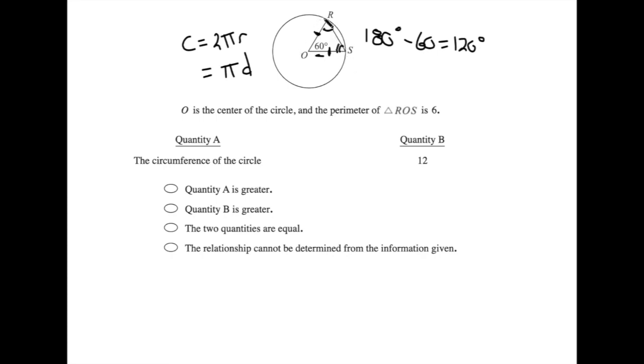Aha! So ROS is not just isosceles, it's equilateral. All three sides and all three angles are equal. If the total perimeter then is 6, then each side is going to be 2, 2, and 2.